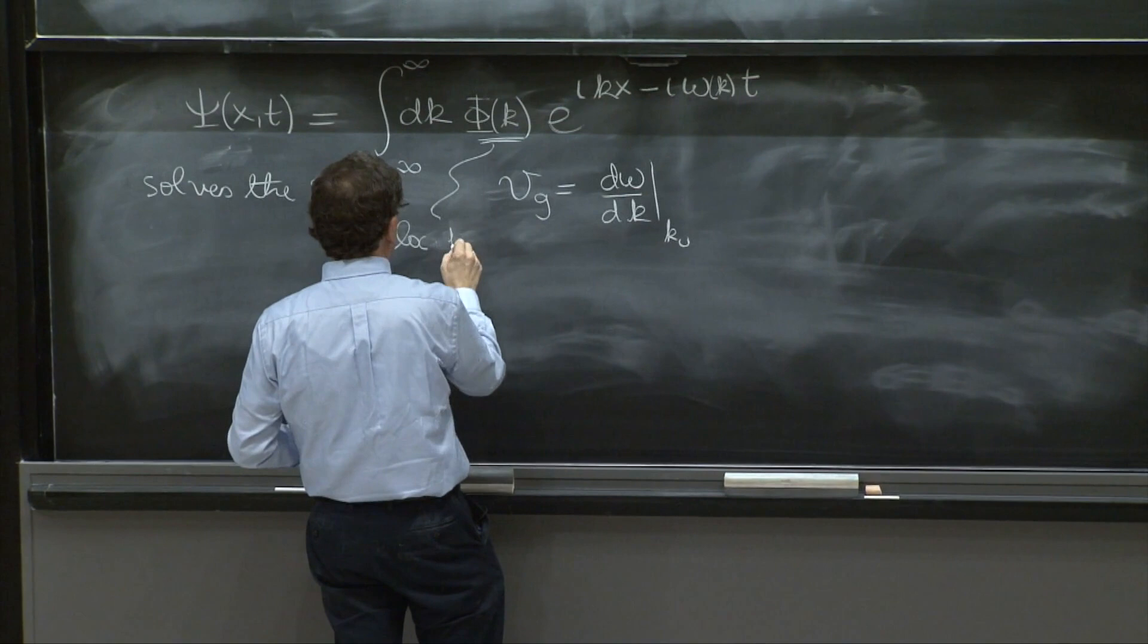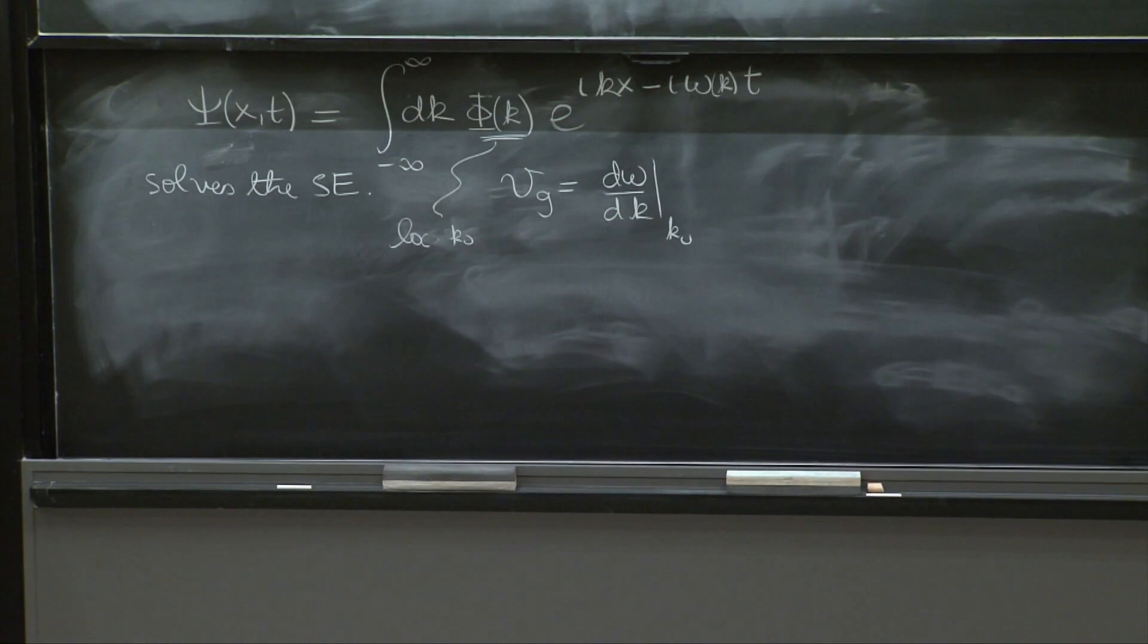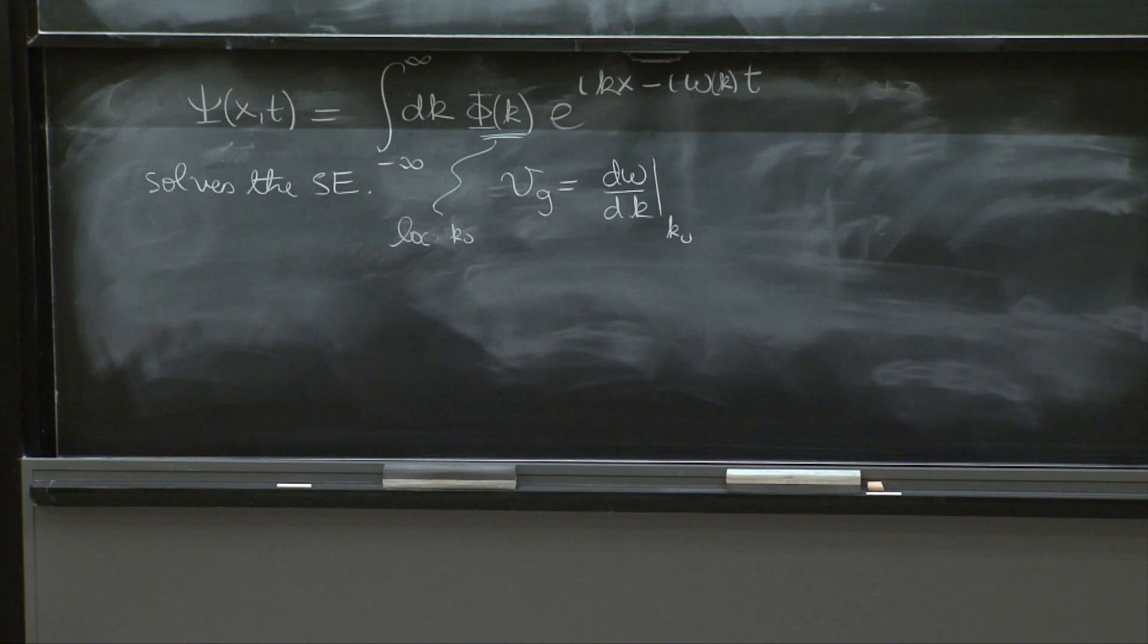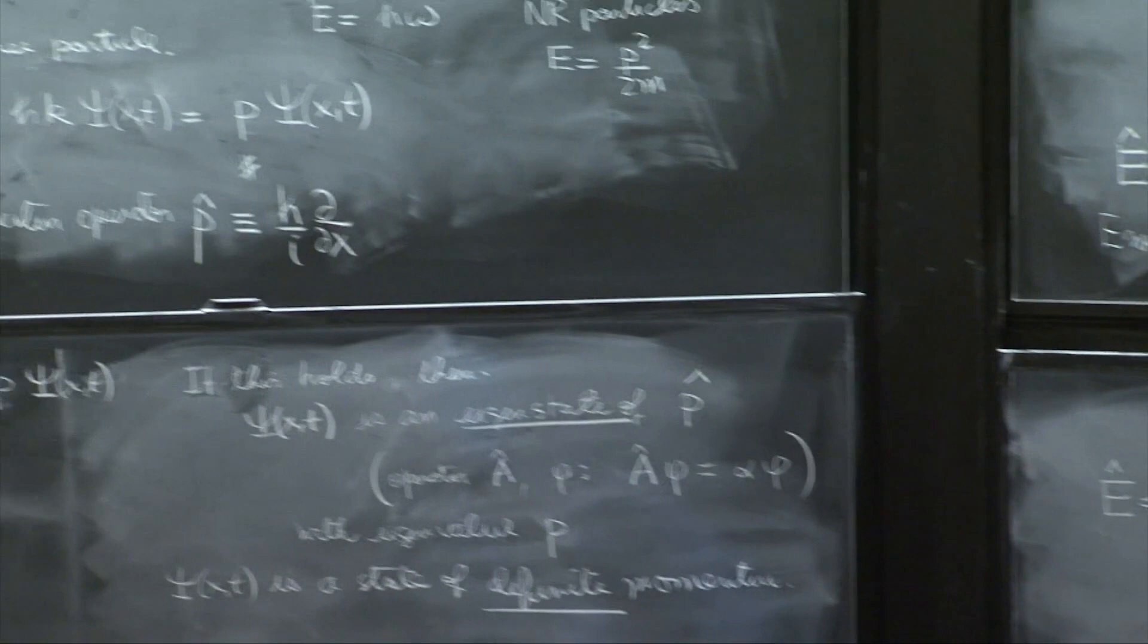Otherwise, you can't speak of the group velocity. This thing will not have a definite group velocity. And the omega dk, and you have this relation between omega and k such a way that this is d e dp, as we said yesterday.